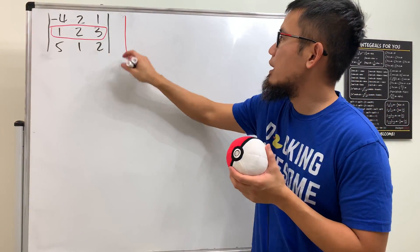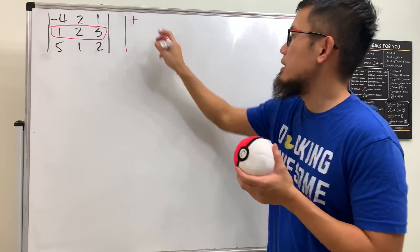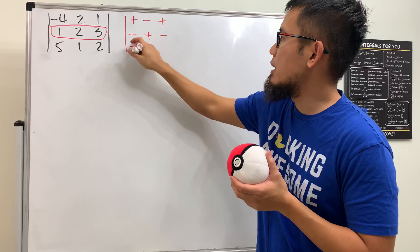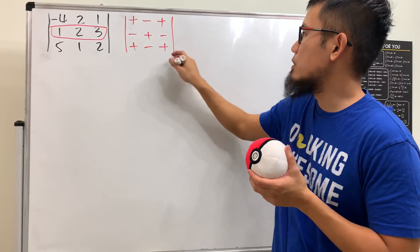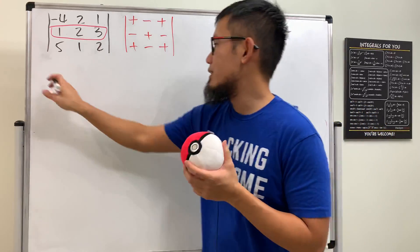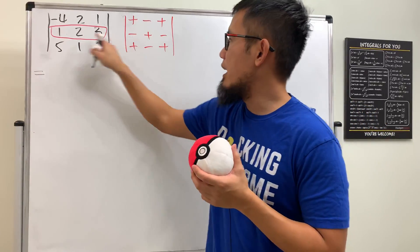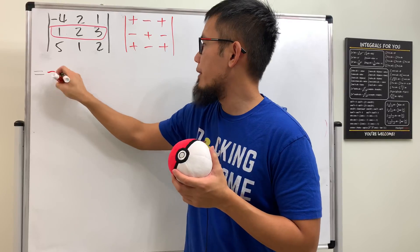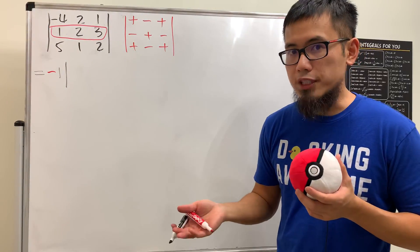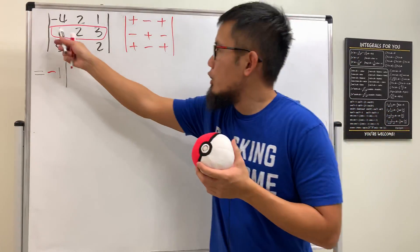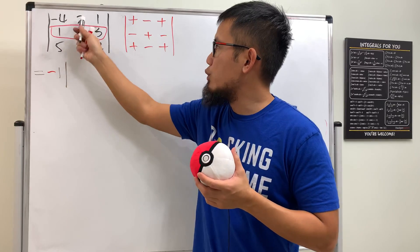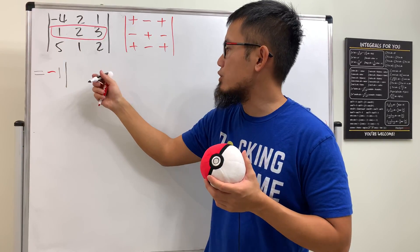You also have to pay attention to the sign. You start with plus here, then alternate: minus, plus, minus, plus, and so on. Now, first we are going to put down negative one and then multiply by the determinant of a two by two matrix. To get that two by two matrix, you just delete this row and this column, and you have two, one, one, two.